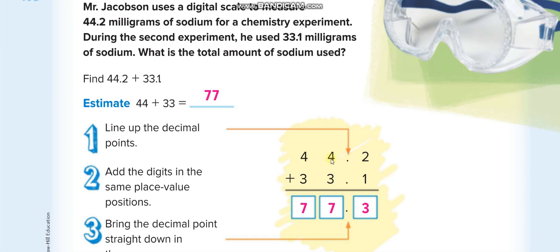The most important thing is placing the numbers under each other according to their place values: the decimal under the decimal, the tenths (the first digit after the decimal) under the tenths, the ones under the ones, and the tens under the tens.